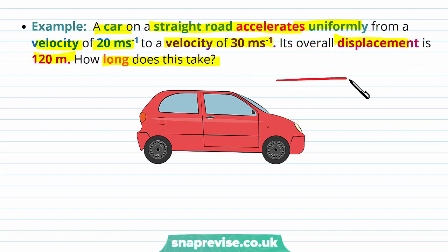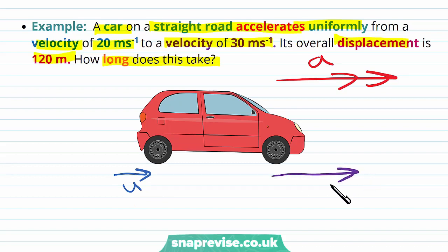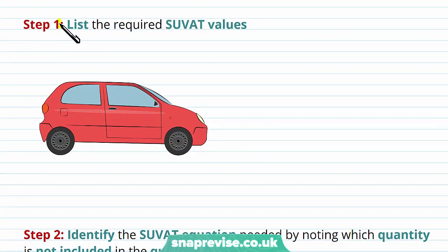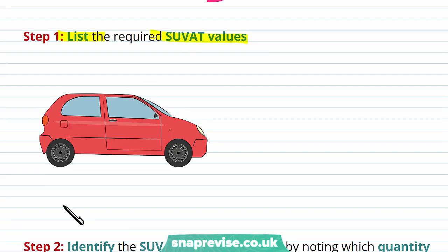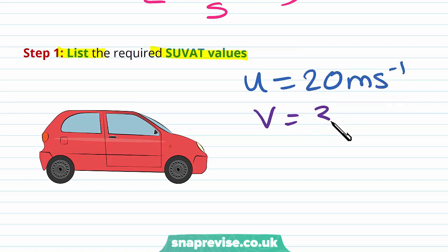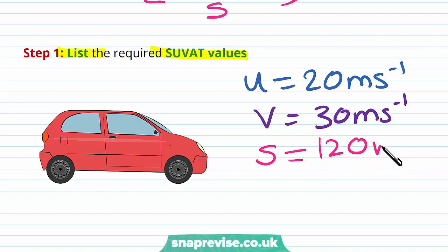We know the car is moving with constant acceleration a. It starts off with a speed u and then accelerates to a final speed v, over a displacement s. Our first step is to list the required SUVAT values. The initial speed is 20 metres per second, the final velocity is 30 metres per second, this velocity change happens over 120 metres, and we want to know the time taken.